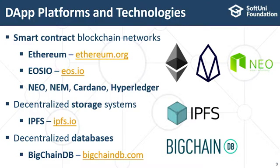Any user can check on the blockchain by the document hash whether it's valid or registered in the smart contract. The technologies used are Ethereum, the Ropsten testnet, the Solidity programming language, the MetaMask wallet browser plugin, JavaScript, and the Web3 API. It's open source on GitHub — you can browse the source and run it.